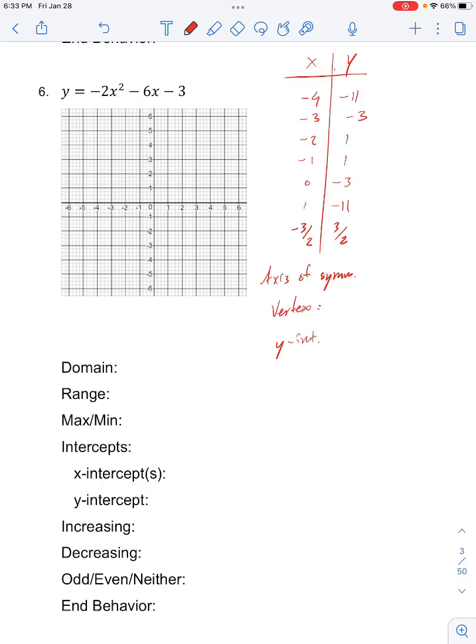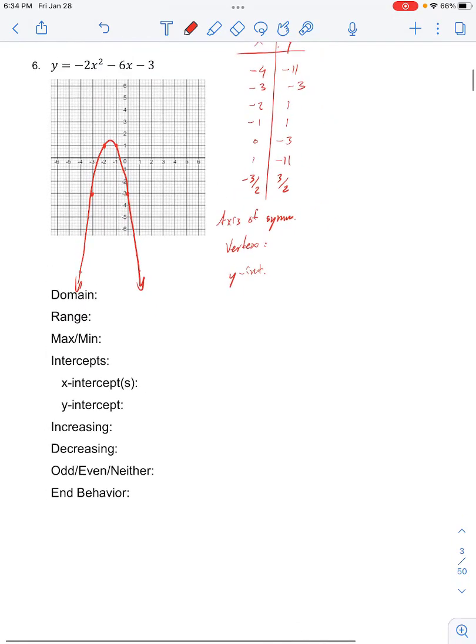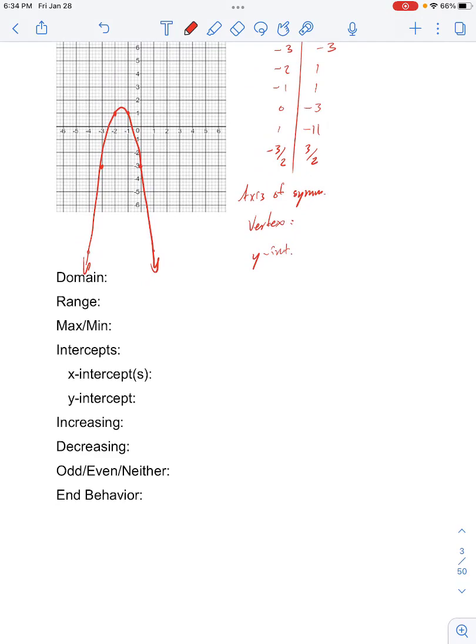So we have negative 4, negative 11, which is off the graph somewhere over here. Negative 3, negative 3. Negative 2, 1. Then we have negative 1, 1. We have 0, negative 3. 1, negative 11. So that, again, would be off the graph. And so our parabola opens this way, meaning that it opens downwards. So our end behavior is decreasing on both the left and right sides.